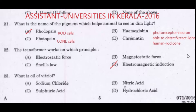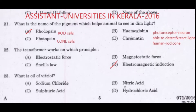Third question: What is oil of vitriol? Option A: sodium chloride. Option B: nitric acid. Option C: sulfuric acid. Option D: hydrochloric acid. Answer: Option C, sulfuric acid.